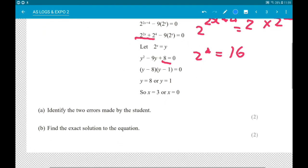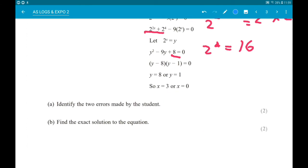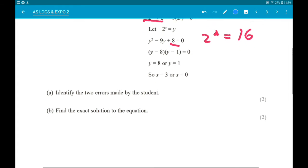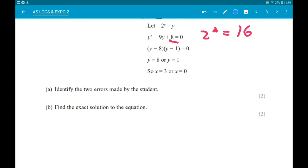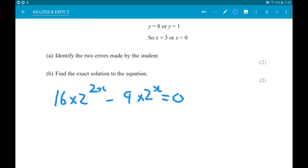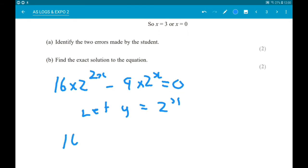Ok, then part B wants us to find the exact solution to the equation. Alright. So, we know we can write this now then as 16 times 2 to the 2x minus 9 times 2 to the x equals 0. Now let's make the substitution. So let y be 2 to the x. So we then have 16y squared minus 9y is equal to 0.